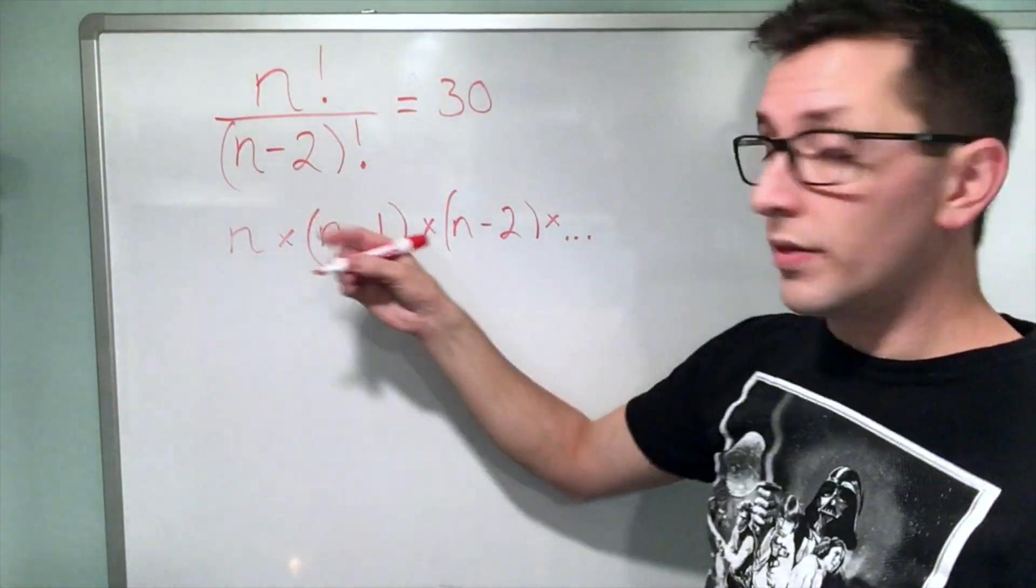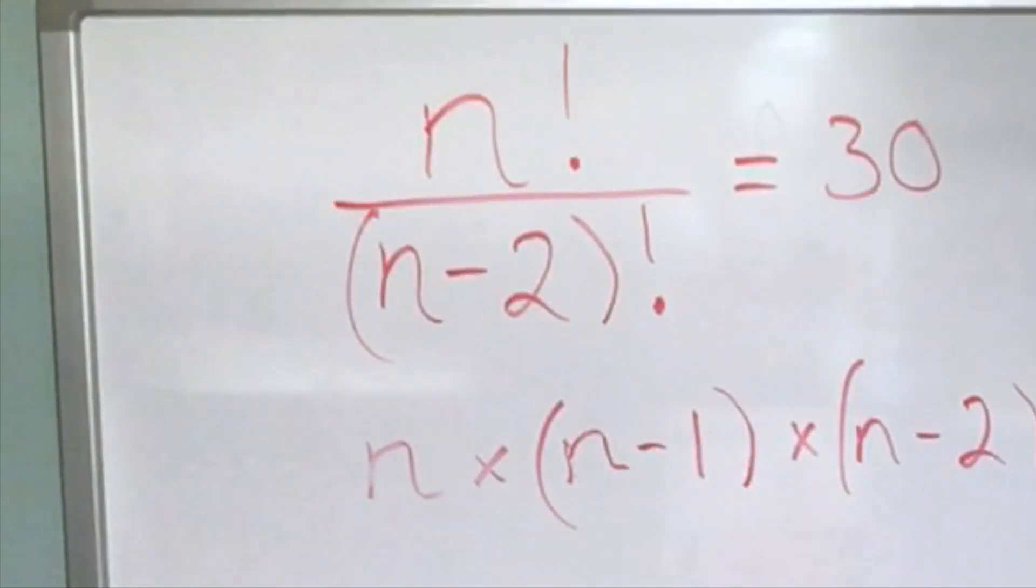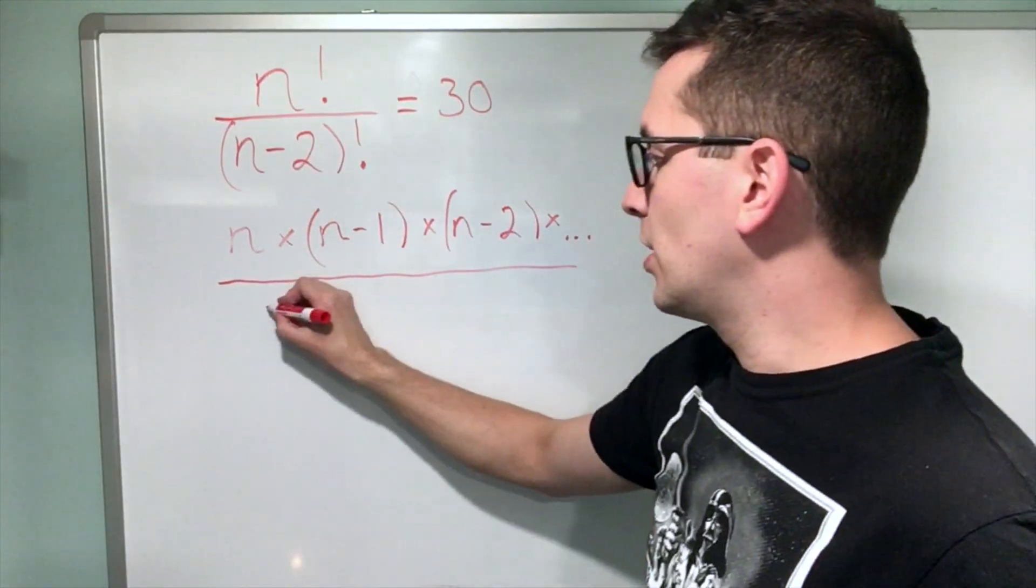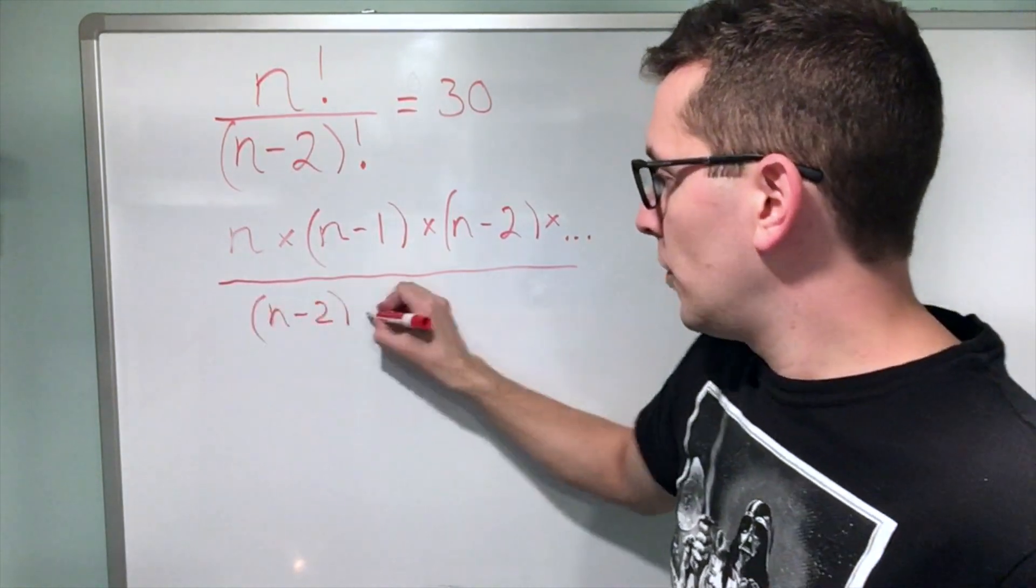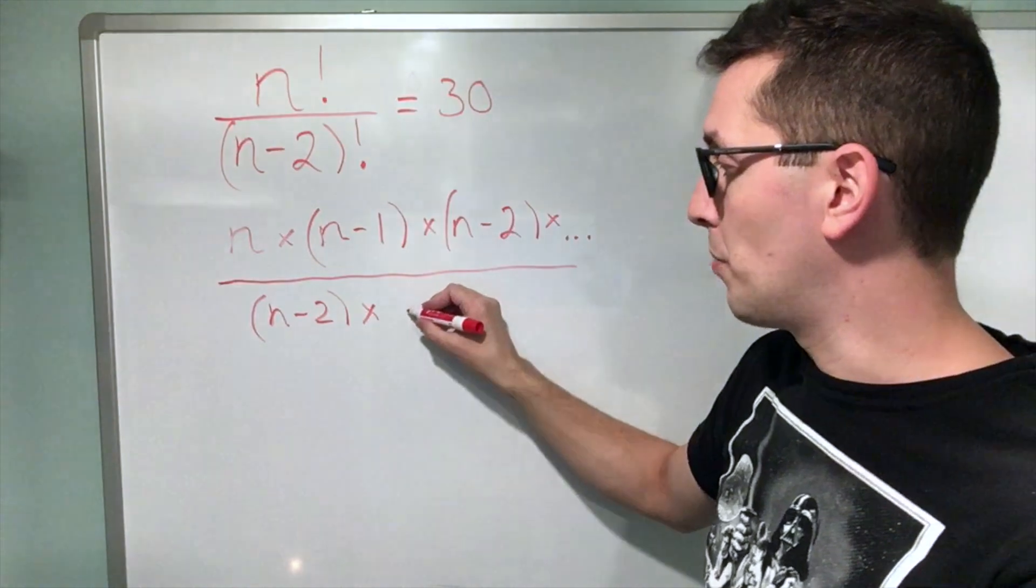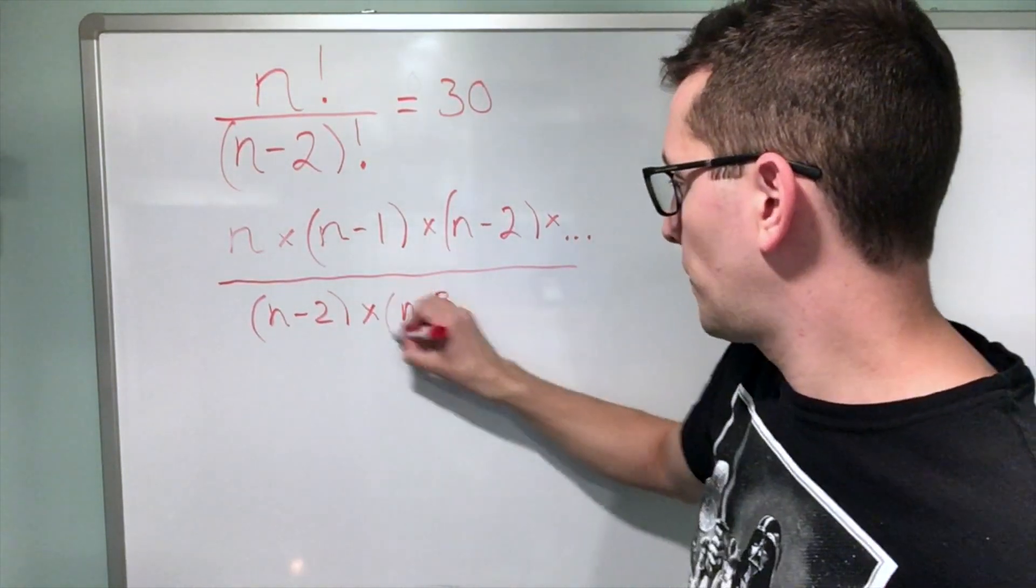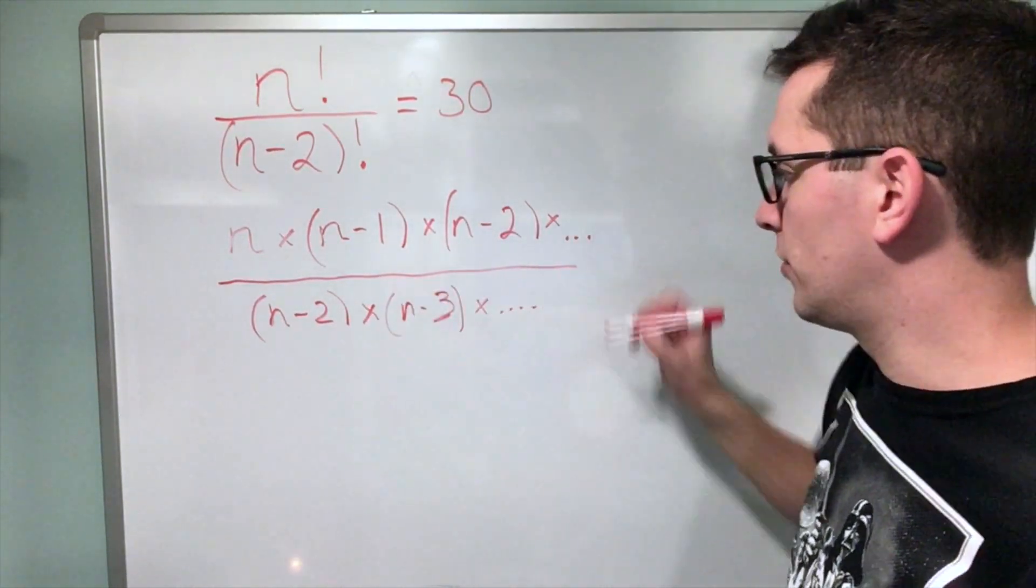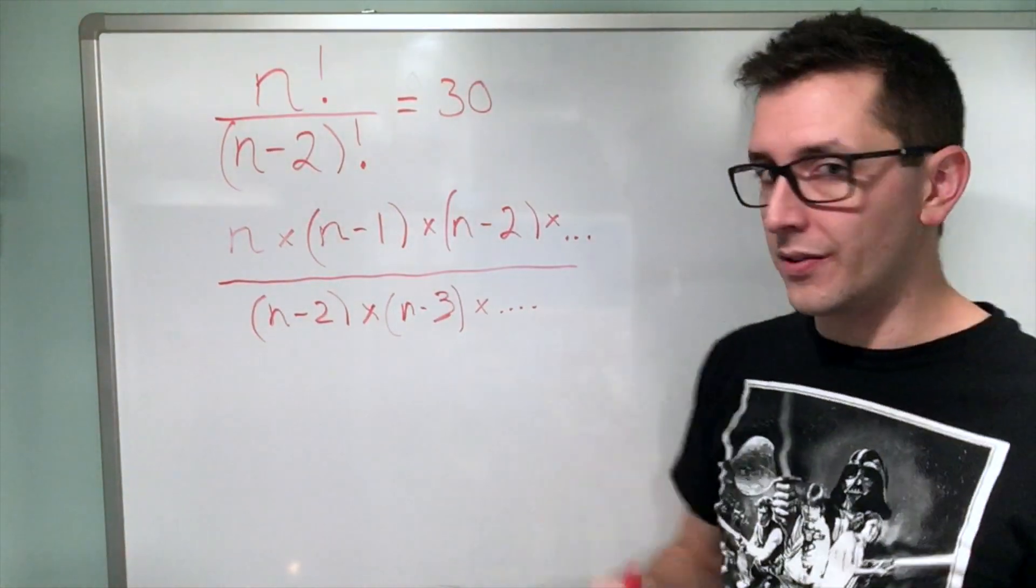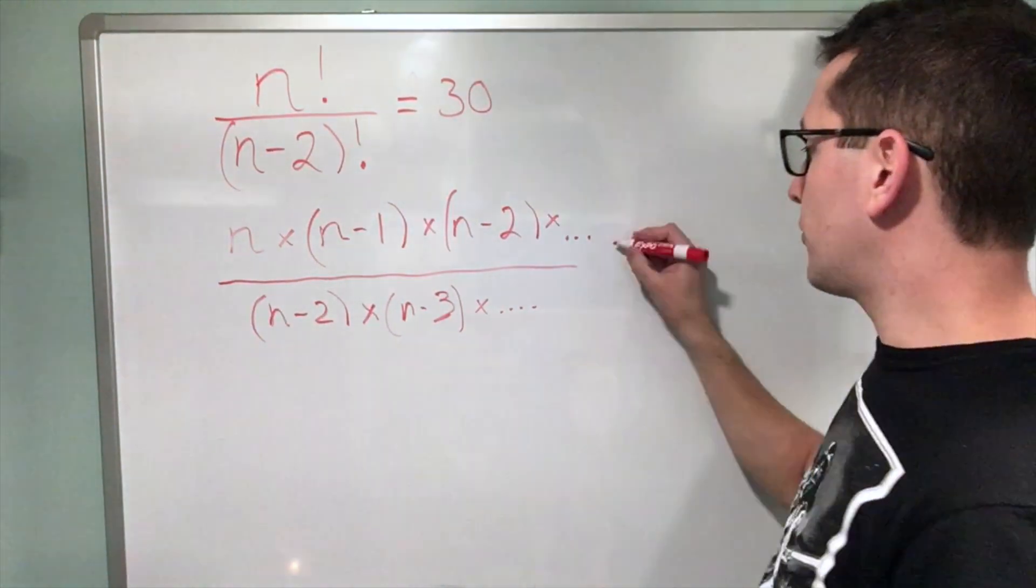I'm going to do the same thing with the denominator, n minus 2 factorial. So when I divide, what I have here would be n minus 2, and I'm going to multiply by the number that would have come before n minus 2, or in this case, n minus 3. And I'm going to do that and continue on forever until I get down to 1, just like I did with the top. The dot dot dot means and so on. Now, I can't forget that this is still equal to 30.